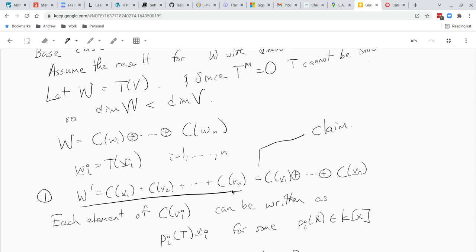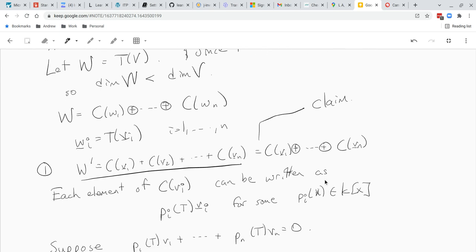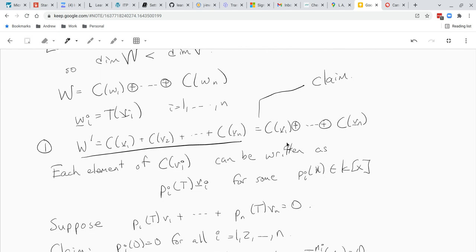So let's review our claim that this W prime is a direct sum. And now we're going to use our notation from the last video saying that every element of this cyclic subspace C of V1 can be written as a polynomial in T times V1, and same for all of them. So for each element of C of Vi, we're going to write it as some polynomial of T times Vi.